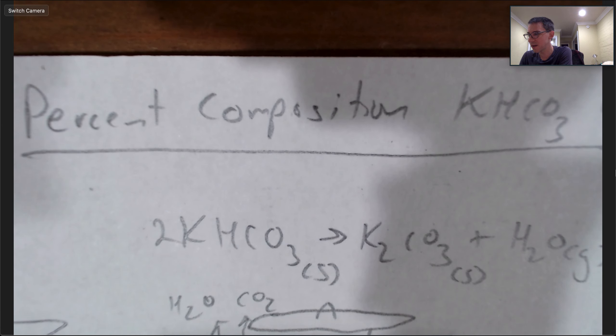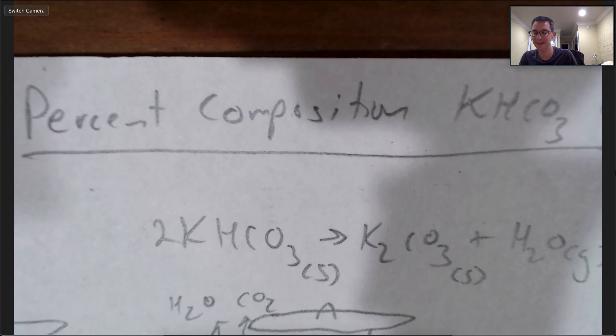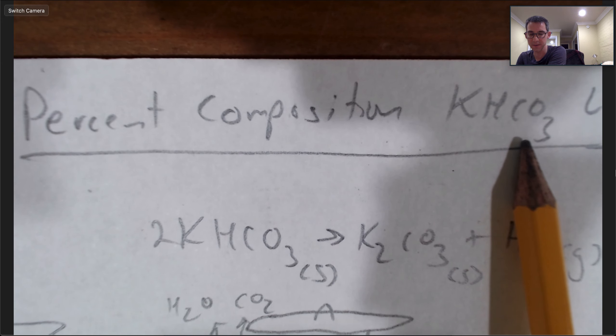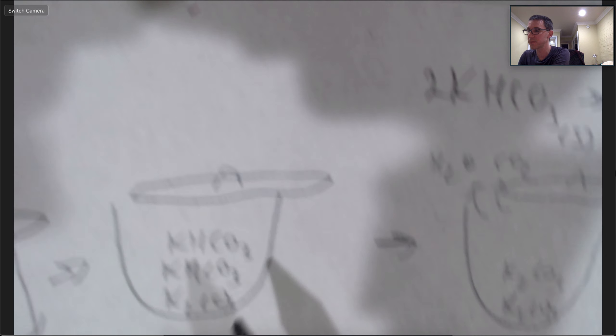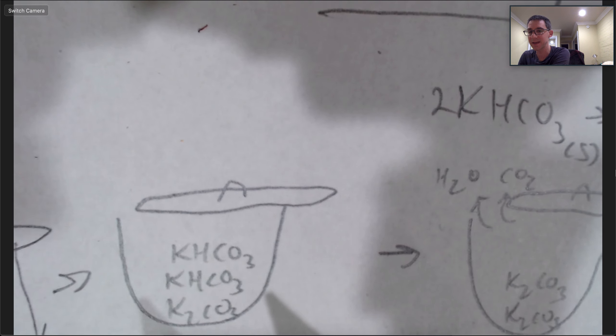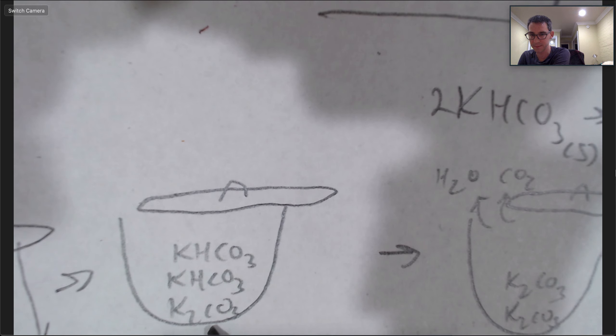Today we're going to be doing a lab where we determine the percent composition of a compound, KHCO3, potassium hydrogen carbonate, within a mixture which contains both potassium hydrogen carbonate and also potassium carbonate. So what percent of this mixture is this compound?